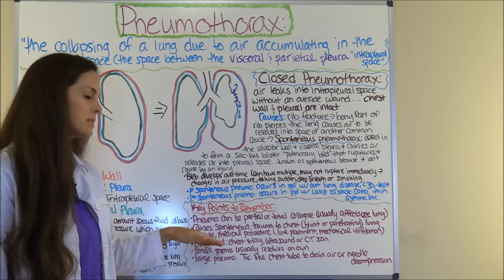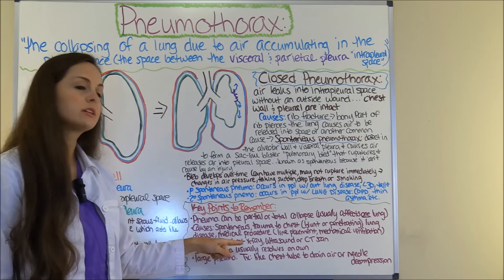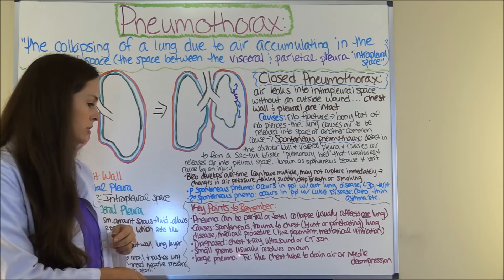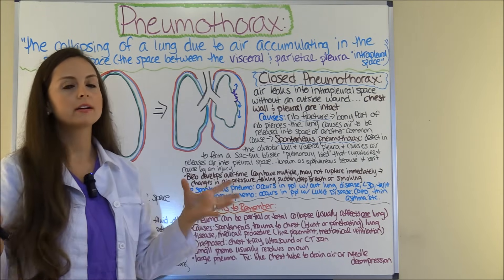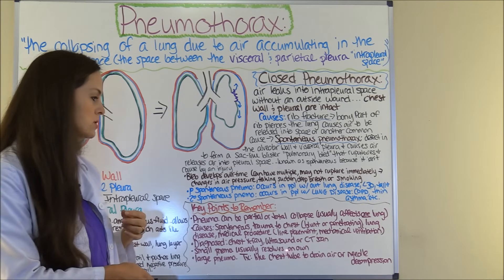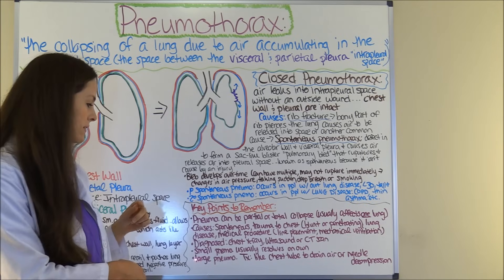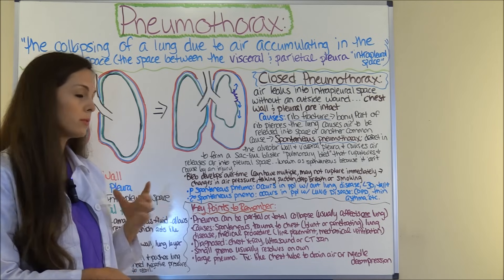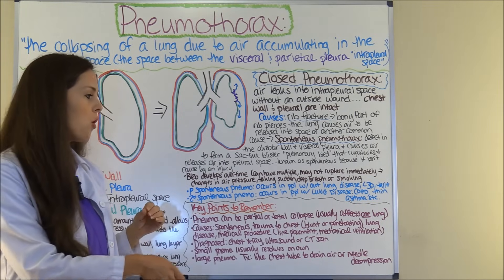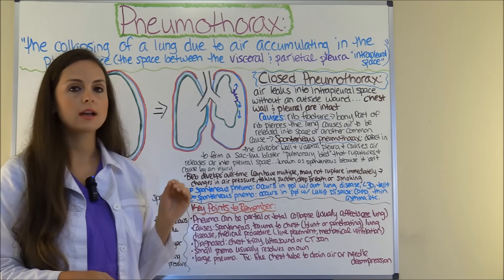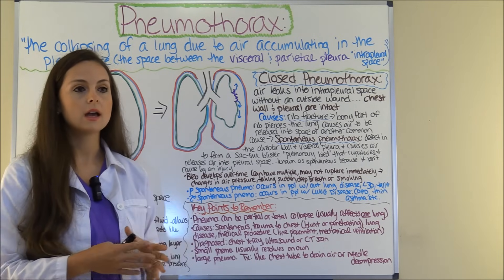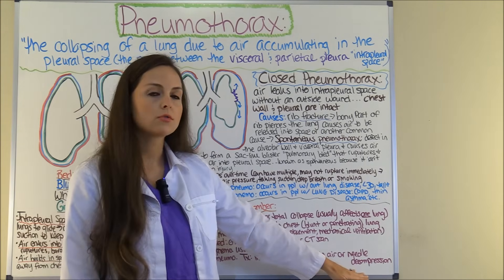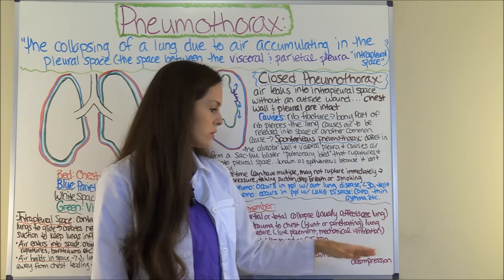How is pneumothorax diagnosed? It's diagnosed usually with a chest x-ray, an ultrasound, or a CT scan. Pneumothorax can vary in size — small ones tend to resolve on their own without treatment. However, if it's large, they will need treatment like chest tube placement to drain air out of the intrapleural space, or needle decompression where they insert a needle into that space and aspirate the air. We'll really be hitting on that with tension pneumothorax, which is a medical emergency.